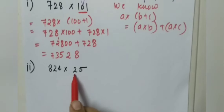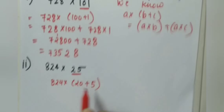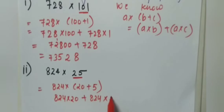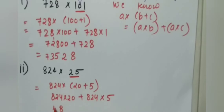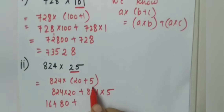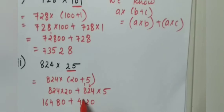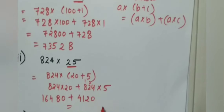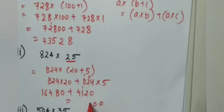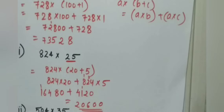Next question: 824 into 25. We'll split 25 as 20 plus 5. So 824 into (20 plus 5) equals 824 into 20 plus 824 into 5. Calculating 824 into 20 gives 16,480, and 824 into 5 gives 4,120. Adding these: 16,480 plus 4,120 equals 20,600.